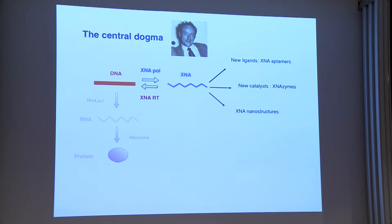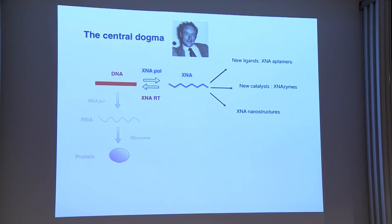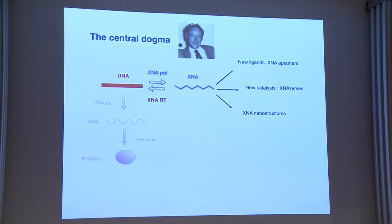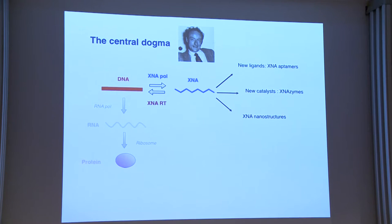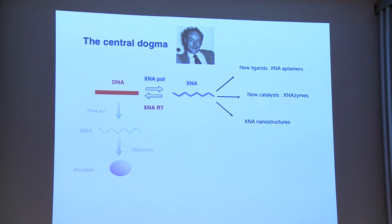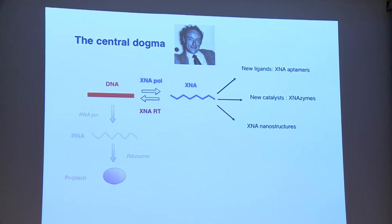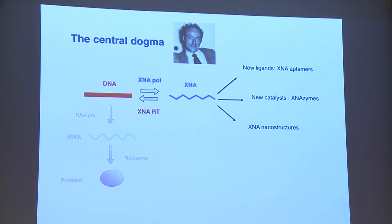That opens the XNA sequence space for exploration. In that sequence space there will be functions — I'm going to tell you about ligands. We can make XNA aptamers, catalysts, XNA enzymes, and you can also build simple nanostructures and devices. When we started this, we didn't just want to do this for one; we wanted to be able to do this at will for a number of backbones, as many as we can.